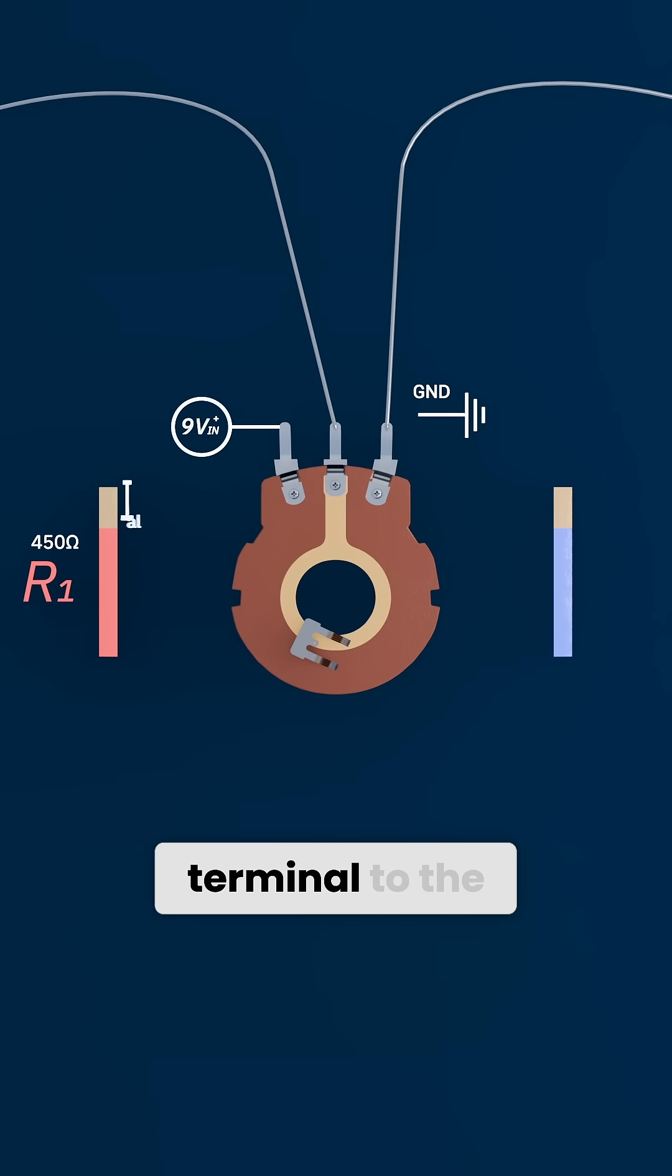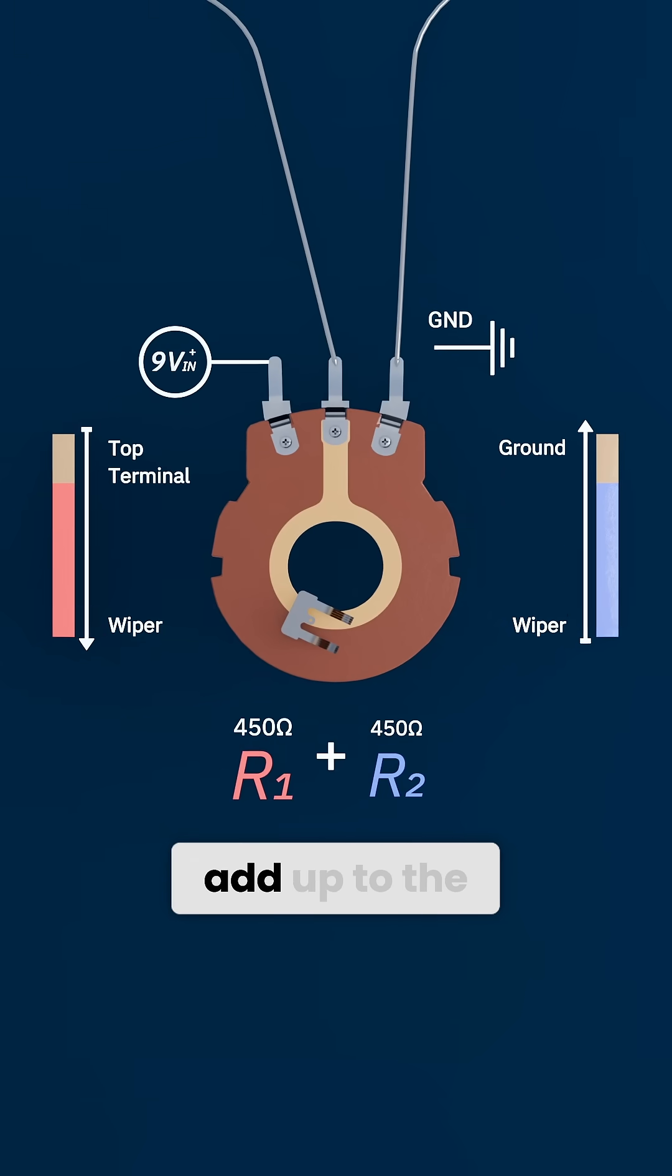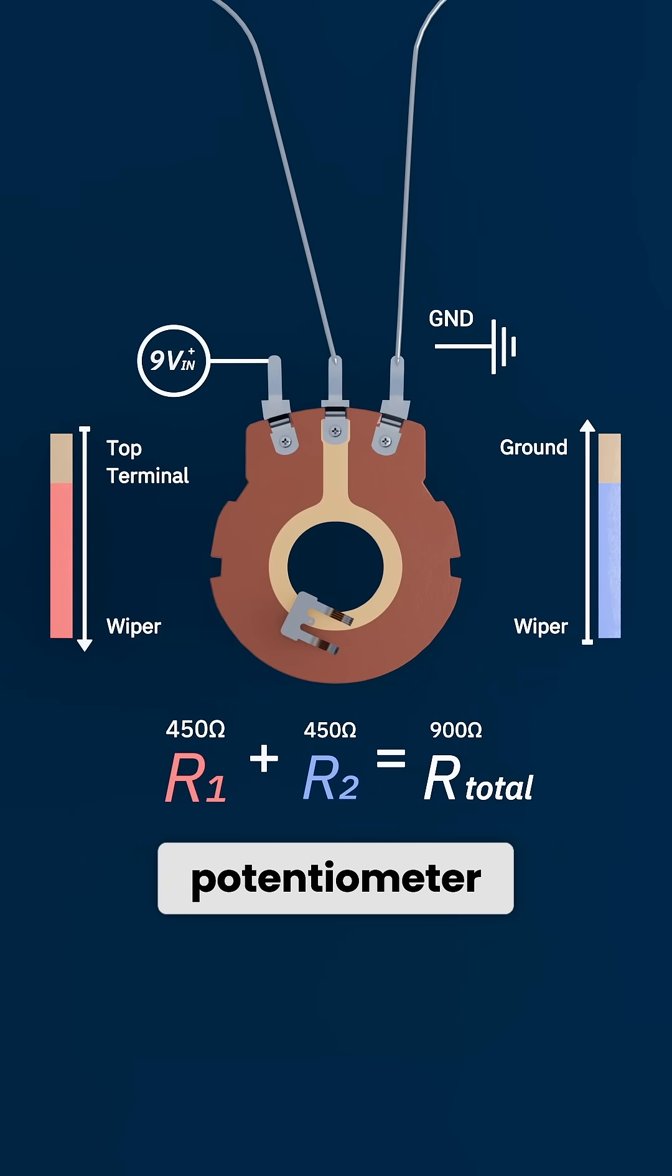R1 from the top terminal to the wiper, R2 from the wiper to ground, and together they always add up to the total resistance of the potentiometer.